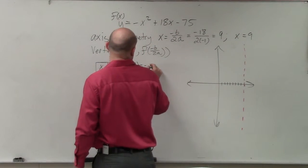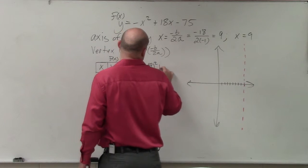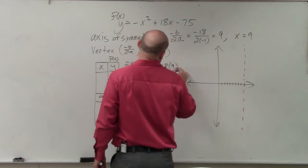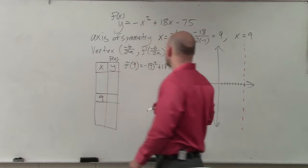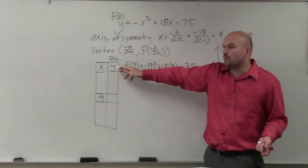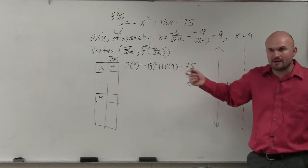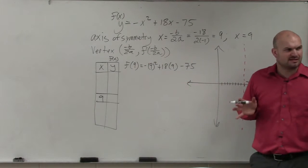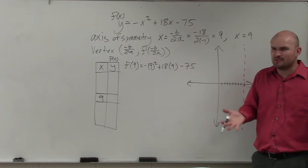So let's go and plug it in. Negative 9 squared plus 18 times 9 minus 75. So all you do is you plug in x to find out what your y coordinate is, or in this case, your f of 9.